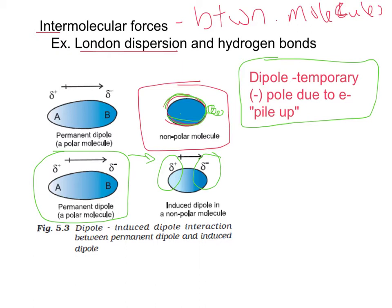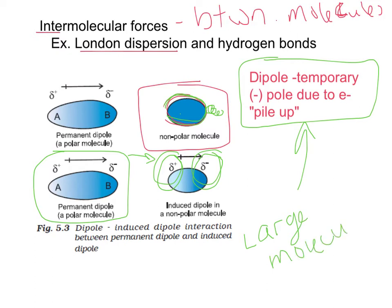Individually, London dispersion forces are not super strong, but collectively they can be relatively strong — like the surface tension you see on top of a glass. This is more common in large molecules, because the farther away from the nucleus an electron is, the less tightly it's held, so electrons move around a bit more in the electron cloud.